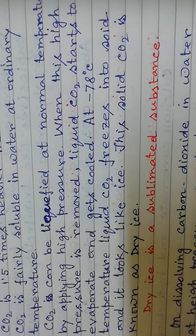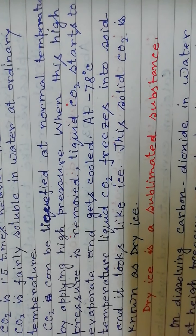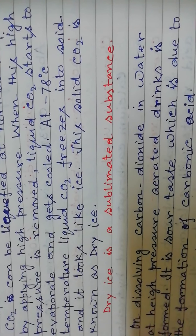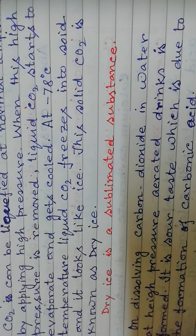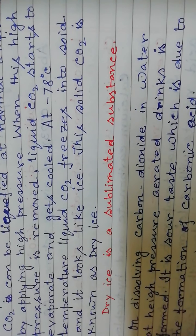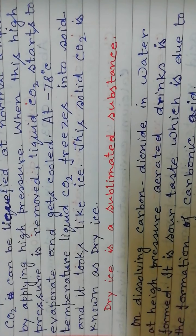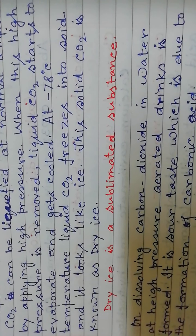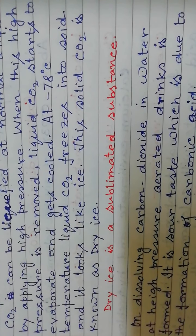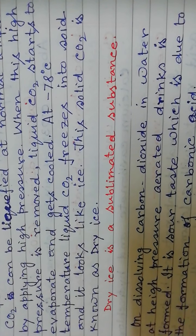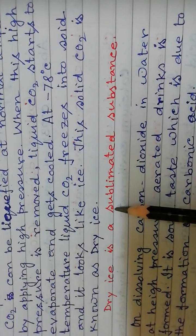This solid carbon dioxide looks like ice and is known as dry ice. Dry ice is a sublimated substance — be careful not to handle dry ice with bare hands, because its temperature is very low, nearly minus 78 degrees centigrade. Sublimated substance means that when it is exposed to air, it starts to evaporate: the solid directly transfers to the gaseous form without going through the intermediate liquid state. That is why it is known as a sublimated substance.